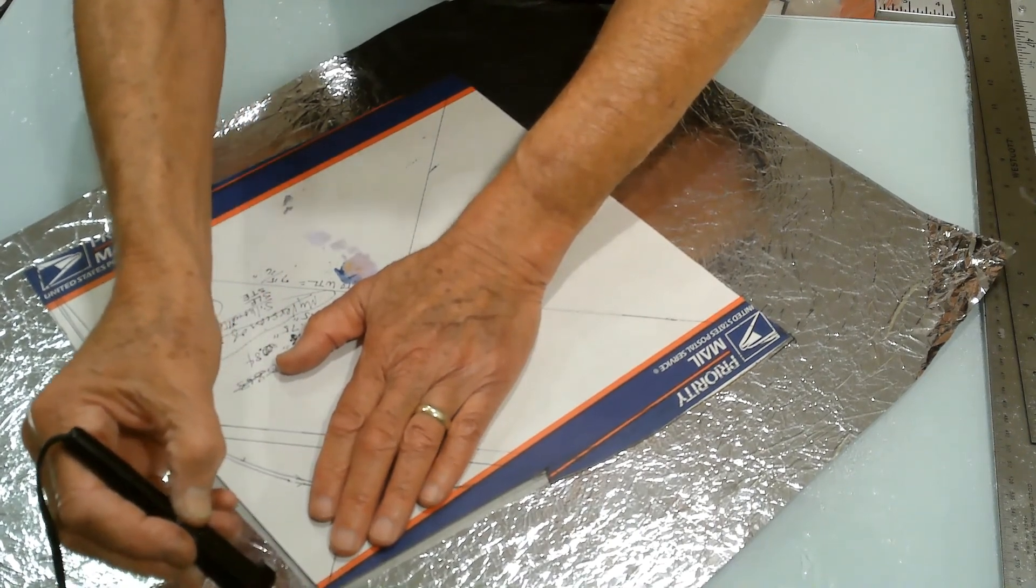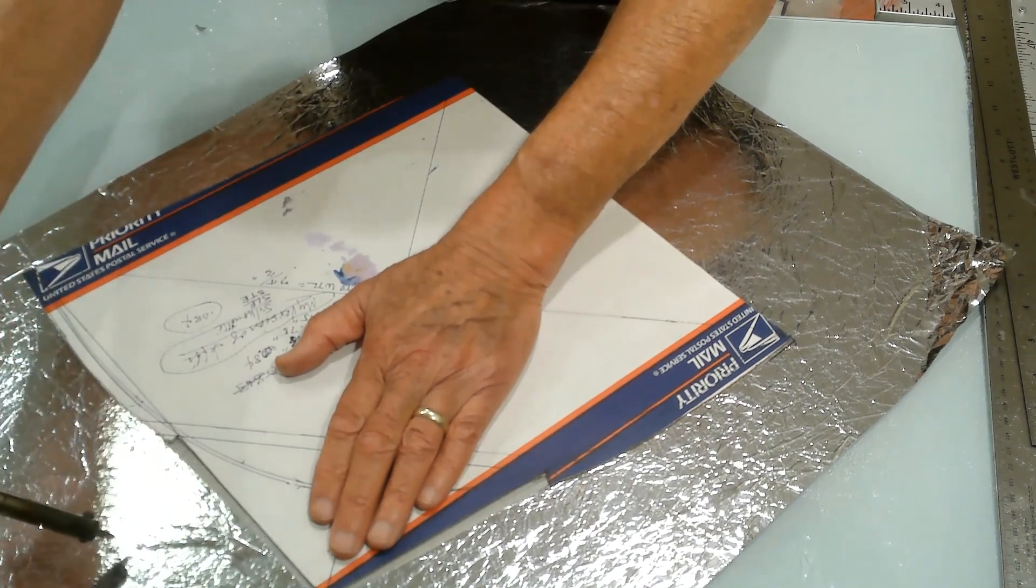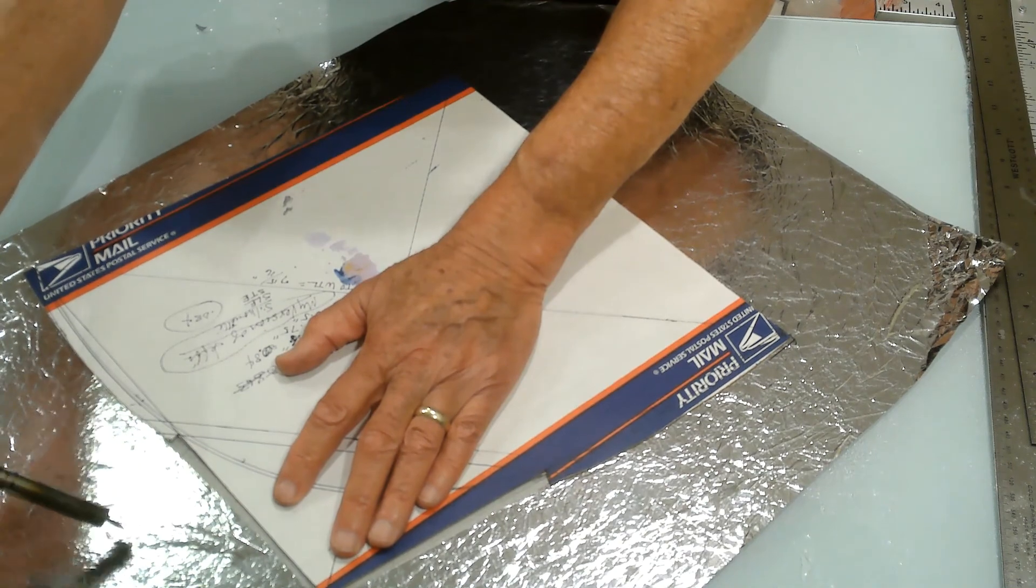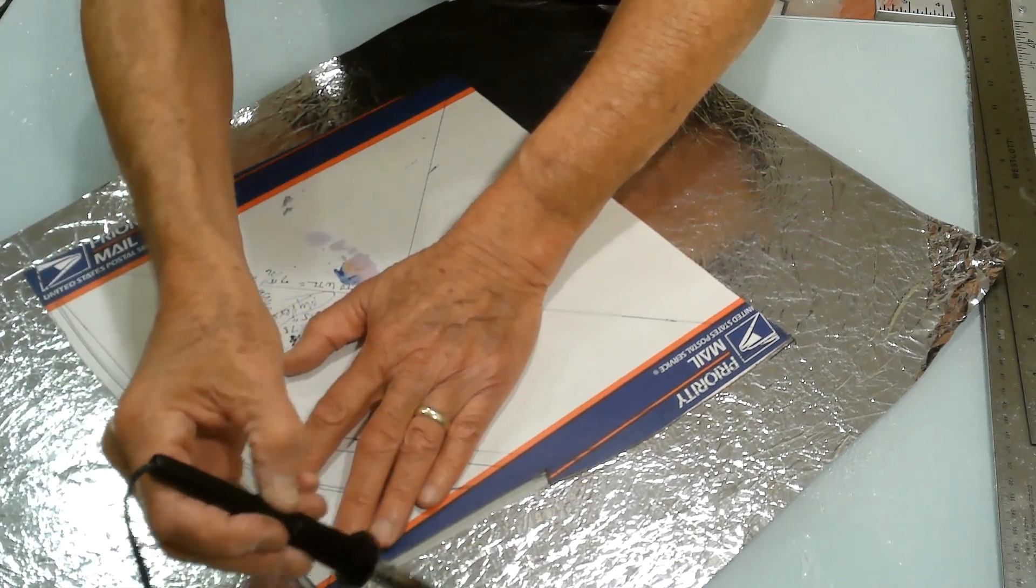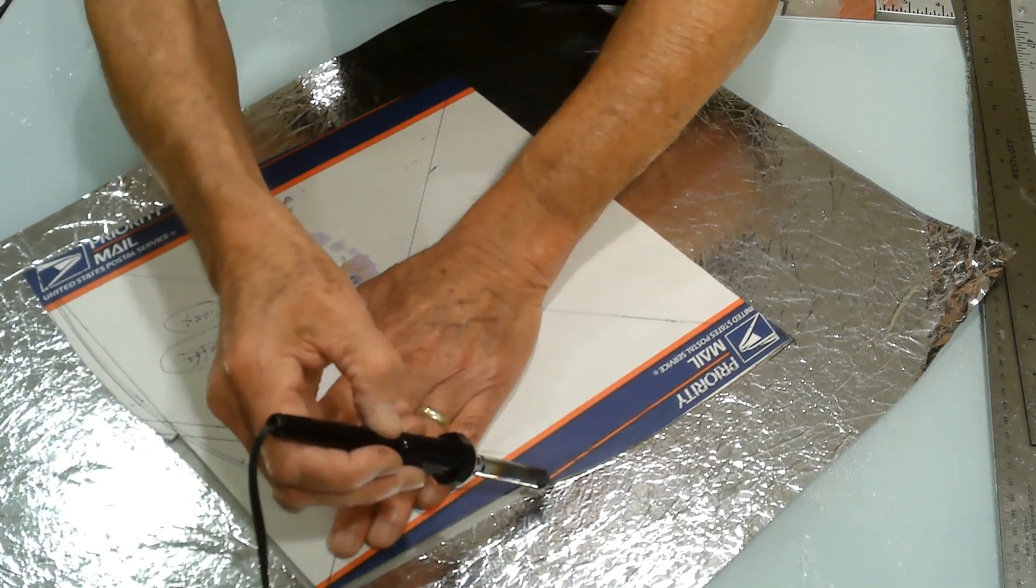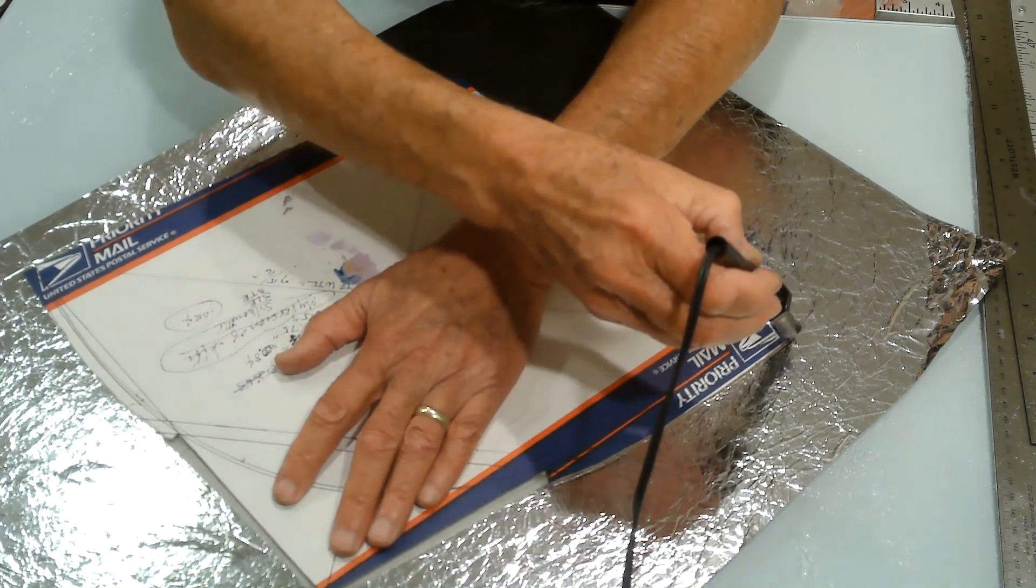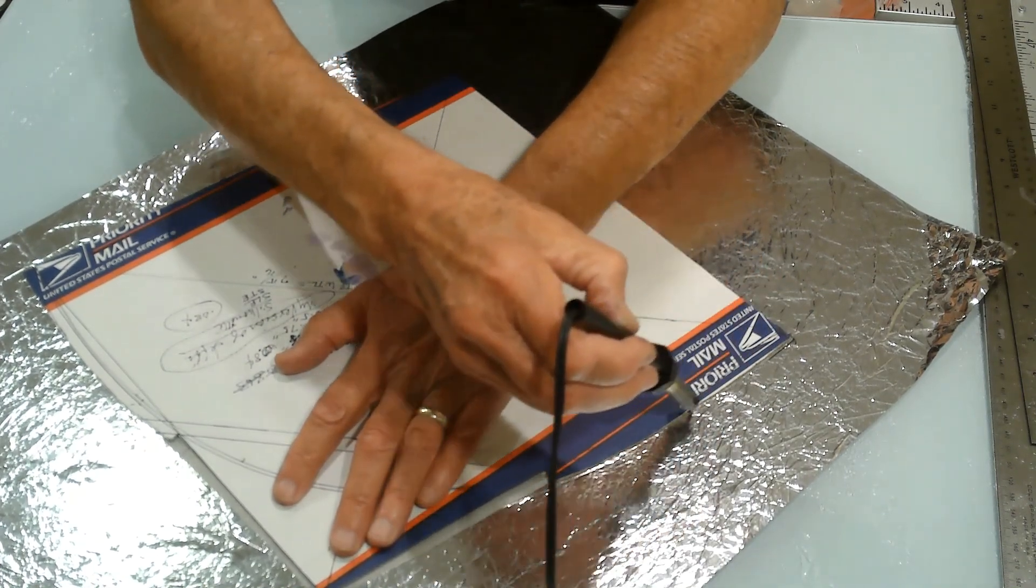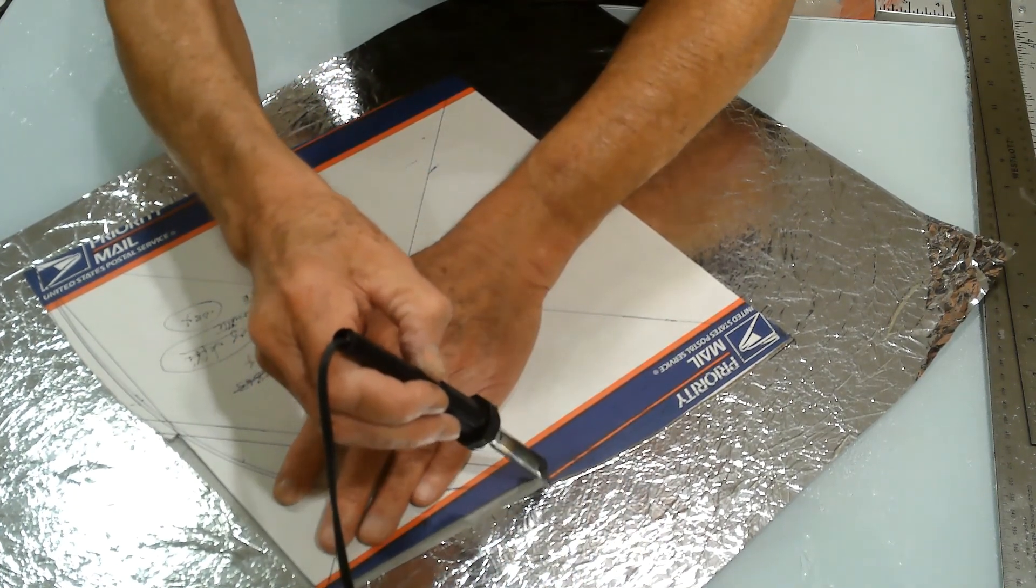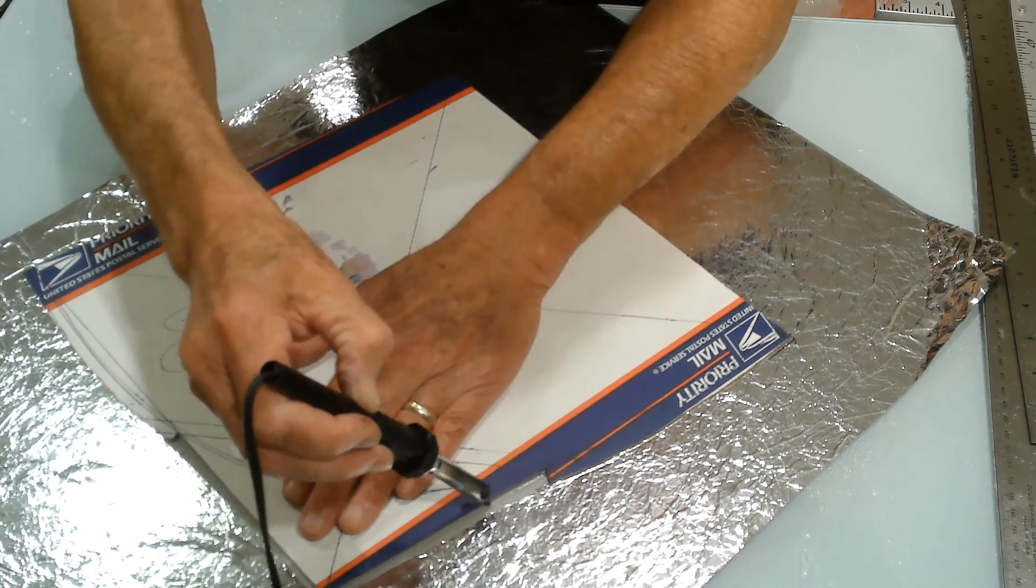I will just cut around the edge of the template here. The thing about a hot cutter that I like is you don't have to apply any pressure. The heat itself does all the work, and so you just need to guide it along the perimeter of your pattern or your template.